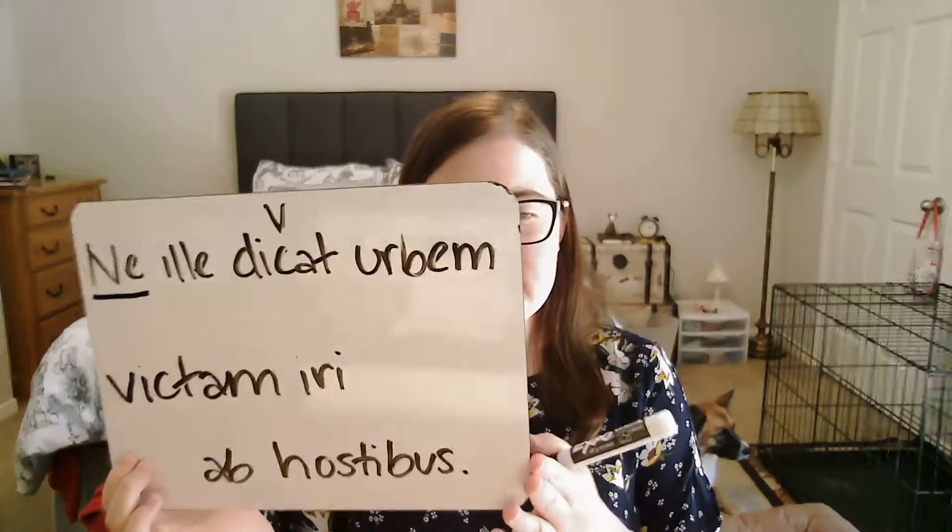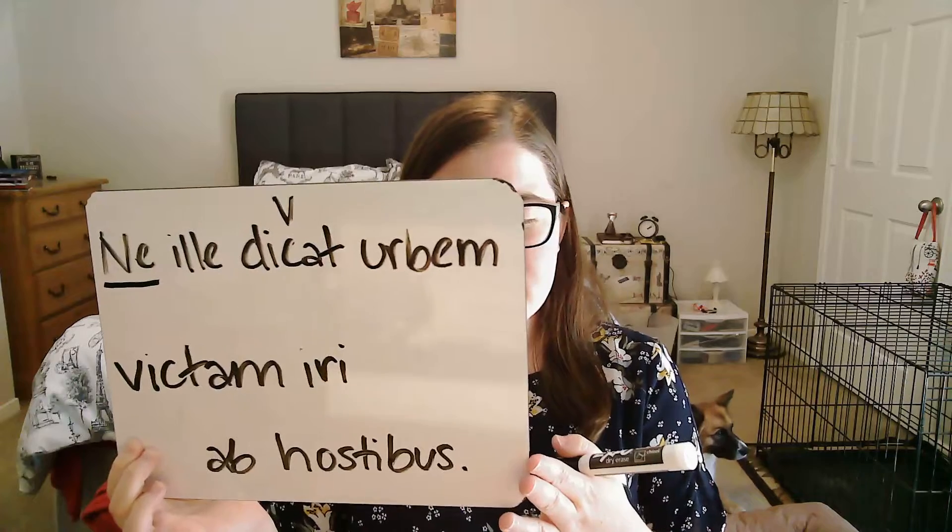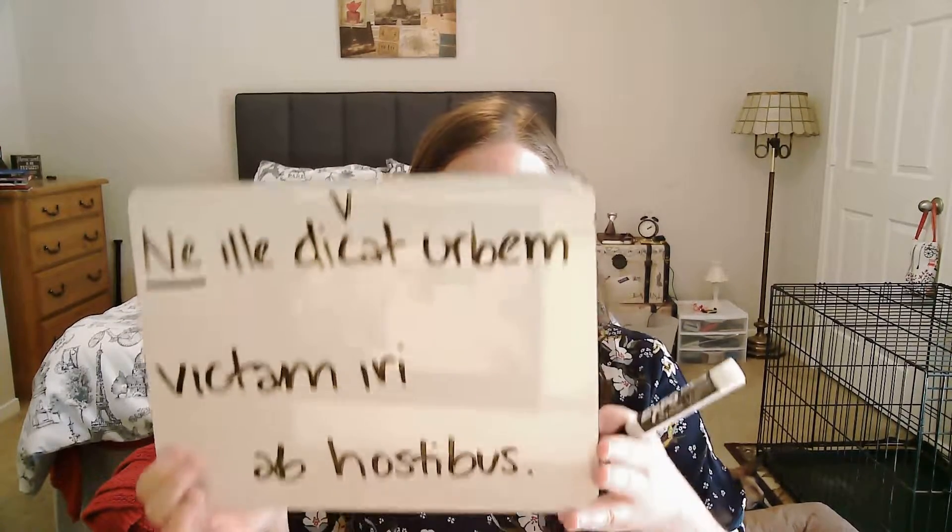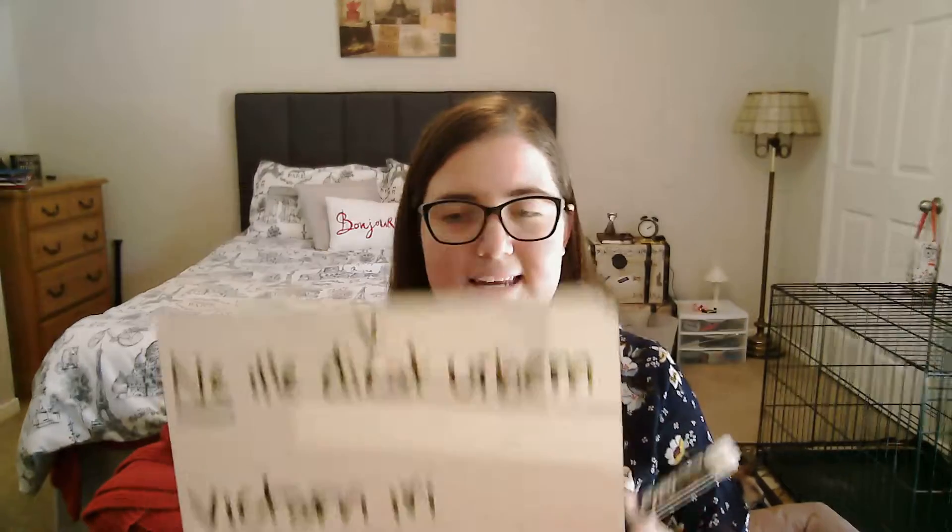So we do have a subjunctive verb there. Now we look for our clues — ut or ne. We have 'ne', which is out here at the beginning of our sentence. And so that tells us that this is a jussive subjunctive, because the 'ne' is at the beginning. That will also throw a 'not' into our sentence because the 'ne' makes it a negative jussive subjunctive.